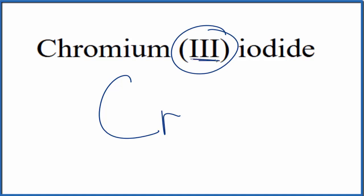This 3 here in parentheses with the Roman numeral III—that means the chromium will be 3+. For the iodide,